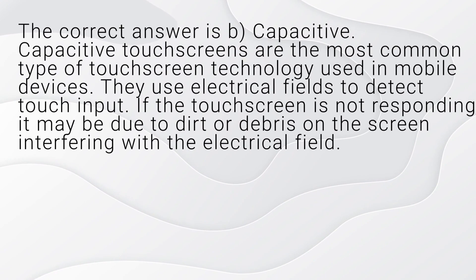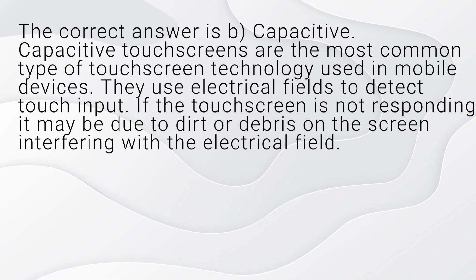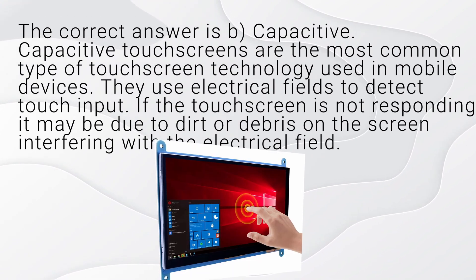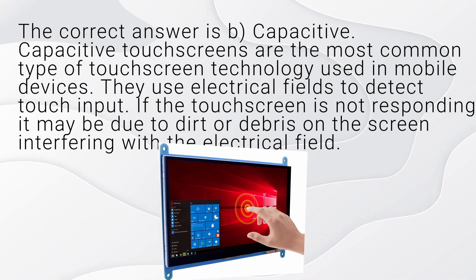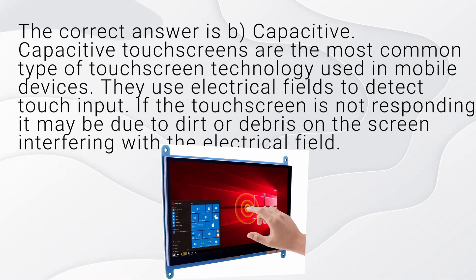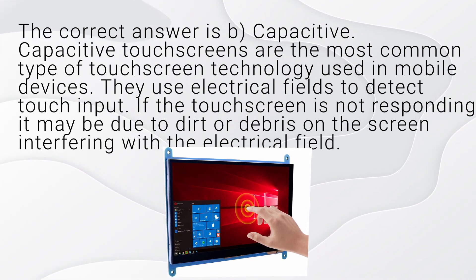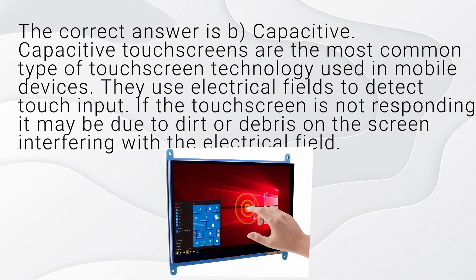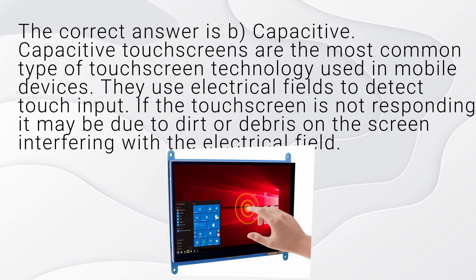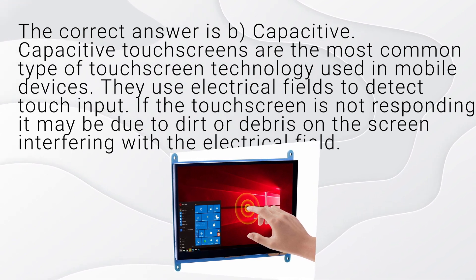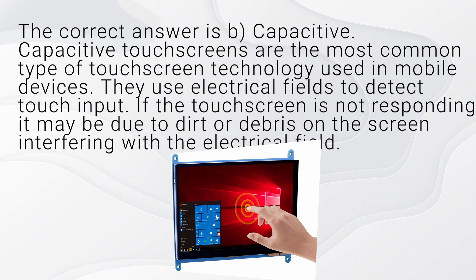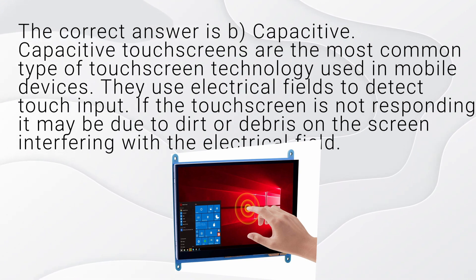The correct answer is B, Capacitive. Capacitive touch screens are the most common type of touch screen technology used in mobile devices. They use electrical fields to detect touch input. If the touch screen is not responding, it may be due to dirt or debris on the screen interfering with the electrical field.